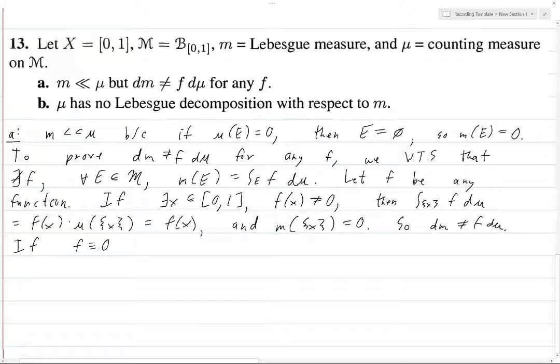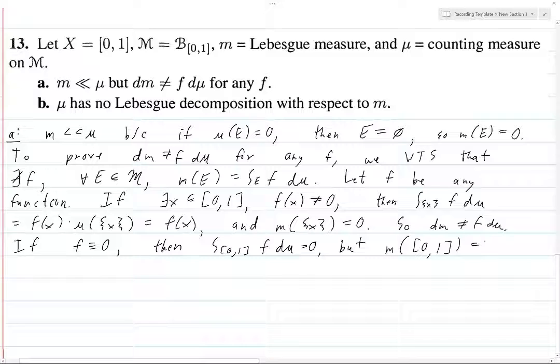If f is identically equal to 0, then what? Then the integral over the entire interval from 0 to 1 of f d mu is equal to 0, but the Lebesgue measure of this interval is just 1.